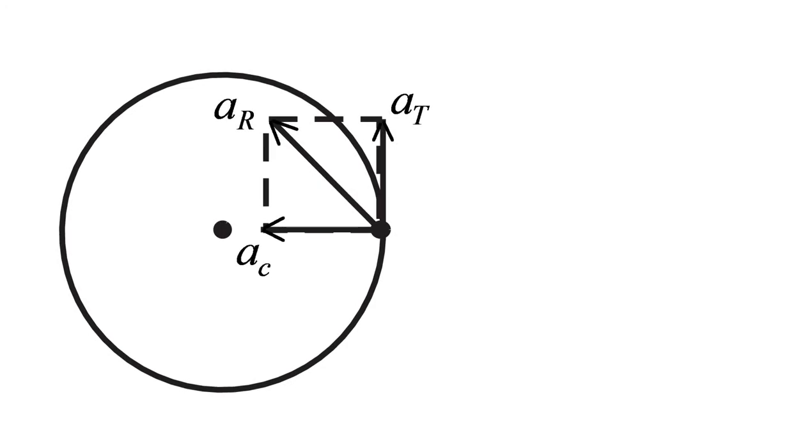In circular motion, linear velocity is directed along the tangent to the circular path, whereas linear acceleration is directed along the tangent as well as along the radius. The acceleration along the tangent varies the linear speed of the object, and the acceleration along the radius is responsible for the change in direction of linear velocity continuously, called centripetal acceleration.